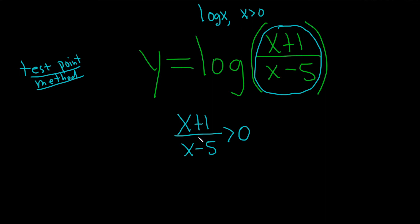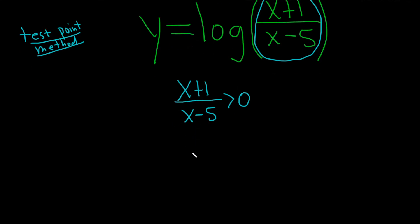The second step in the test point method is to set each piece equal to 0. We set the top piece, x plus 1, equal to 0, and the bottom piece, x minus 5, equal to 0. Then we solve. So x equals negative 1, x equals 5.